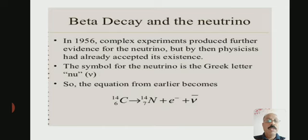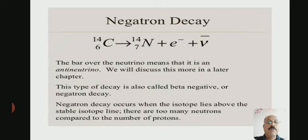The bar over the neutrino means that it is an anti-neutrino. Energy having some frequency must be emitted. We will discuss this more later.